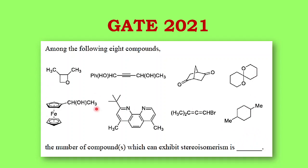These were the eight compounds which were asked. Now the question is how to identify whether a compound would exhibit stereoisomerism or not. There are two criteria: either a molecule should have a chiral center, or if there is no chiral center, the overall molecule should be chiral, as we had seen in our previous video. Let us see one by one all the molecules and find out which of the following compounds would exhibit stereoisomerism.